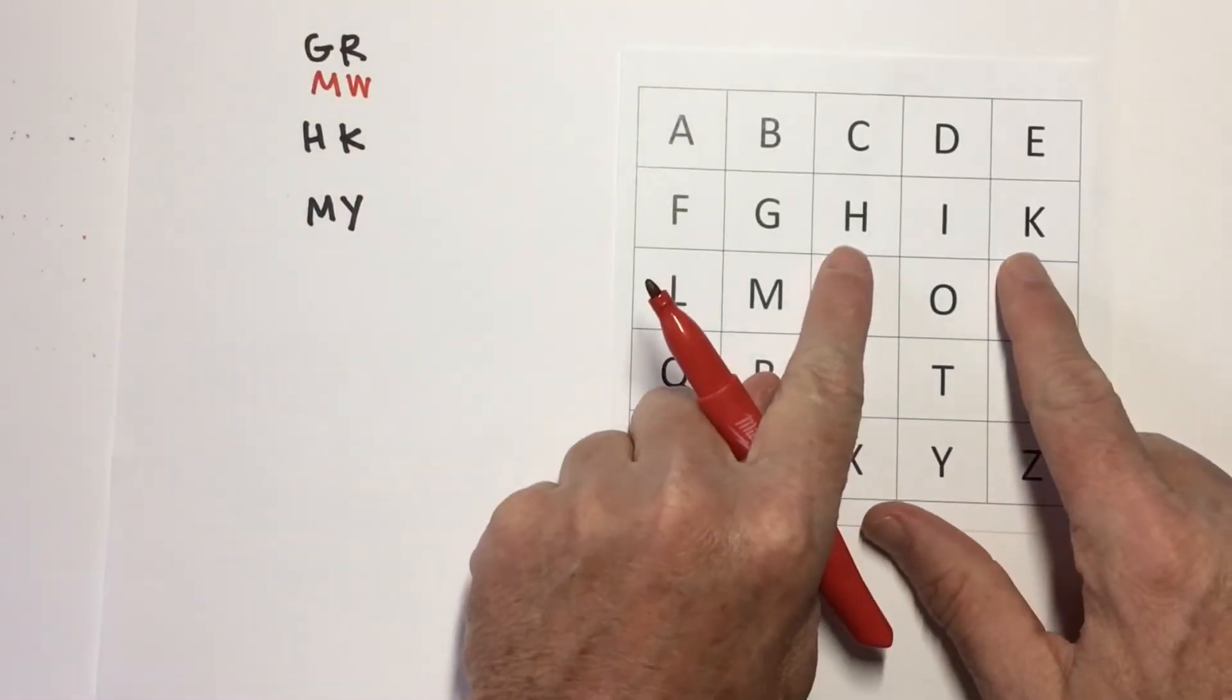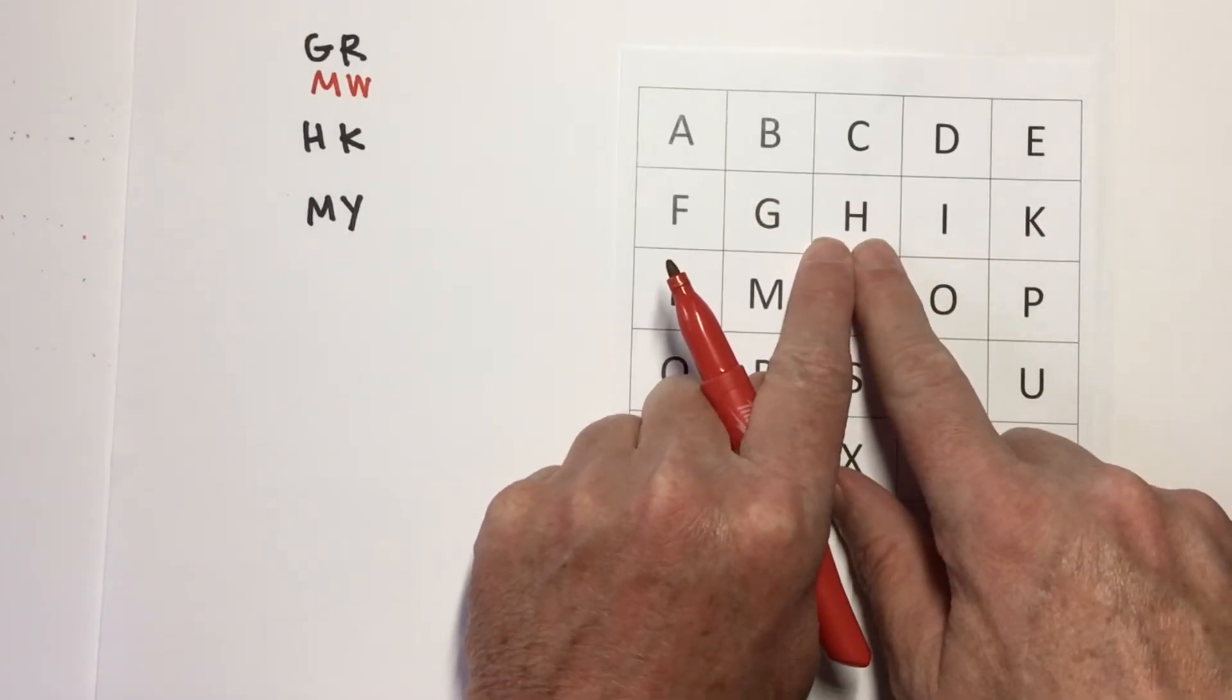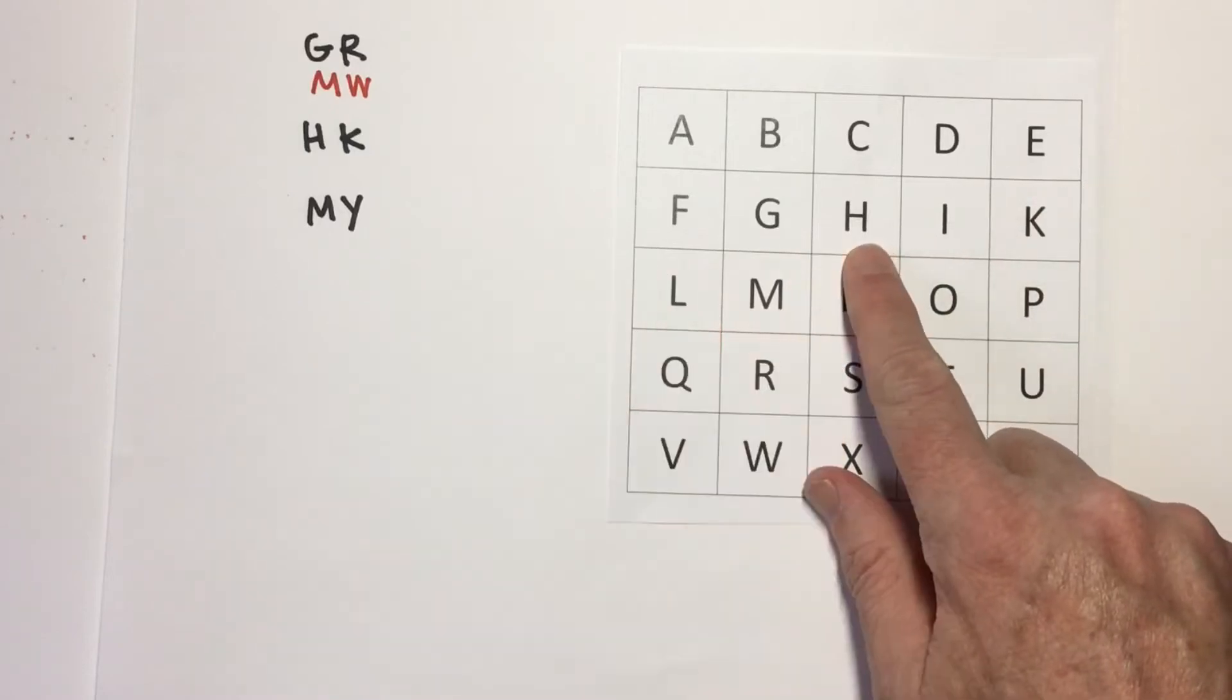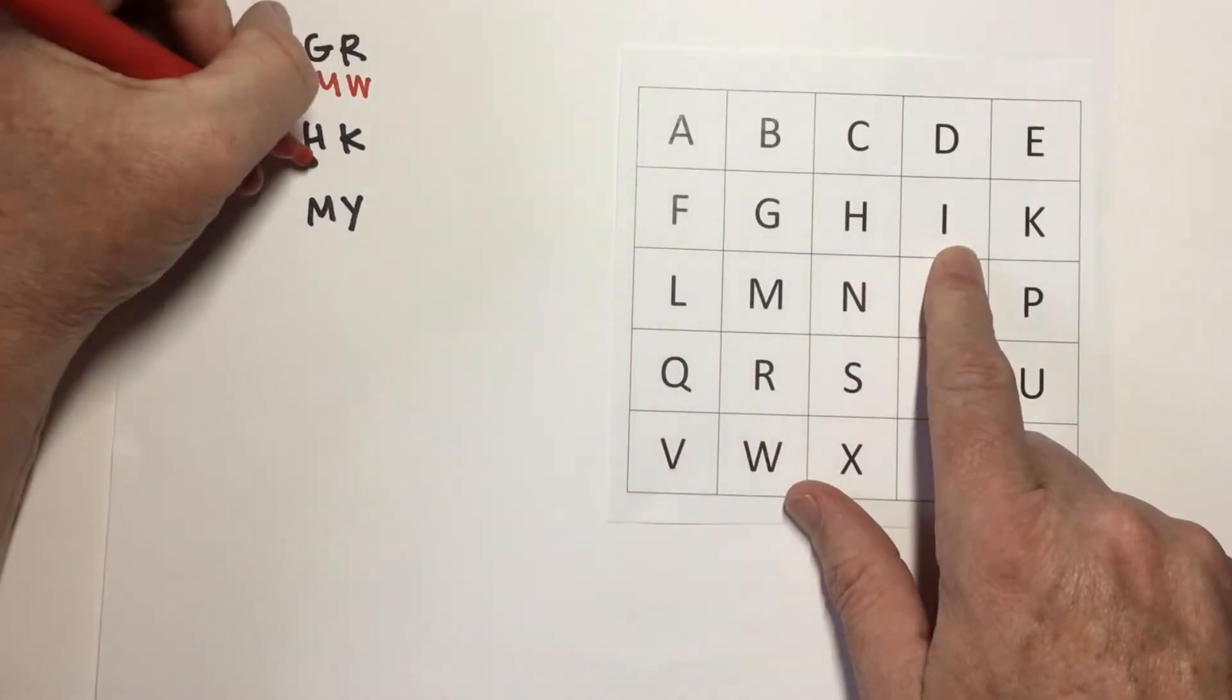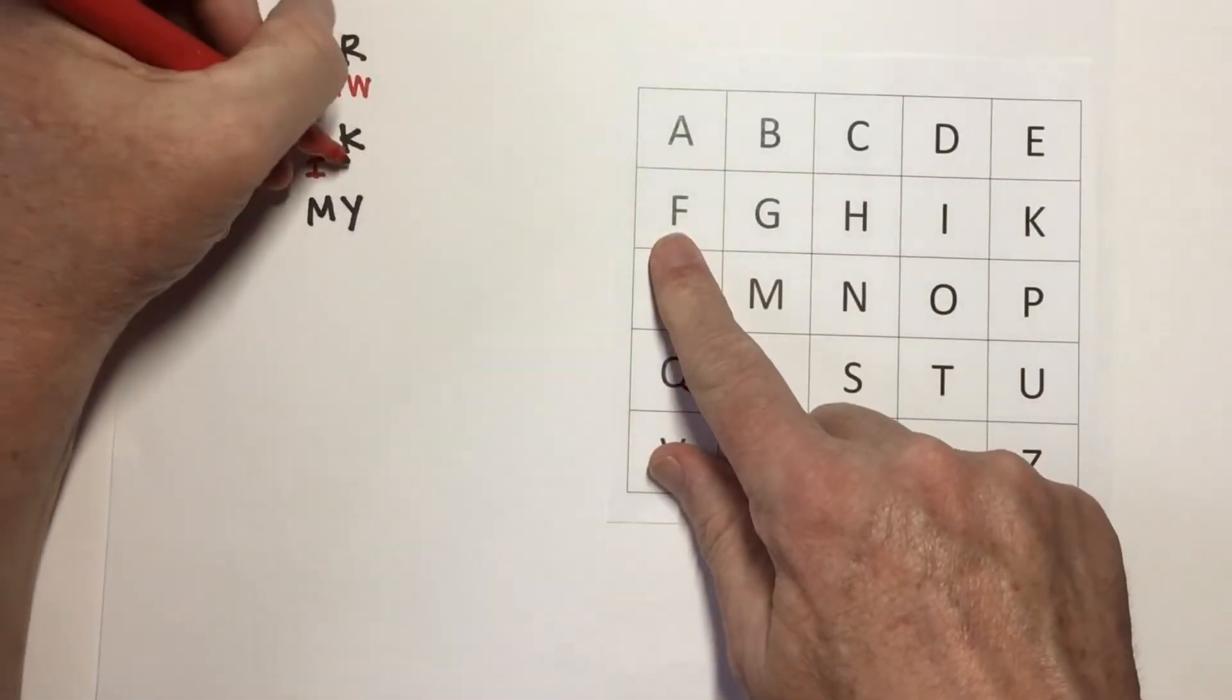If, like HK, the letters are in the same row, then I replace them with the letter that comes to the right of the letter I'm interested in. So, H would become I. And K, there is no letter here, so we wrap around, K becomes F.